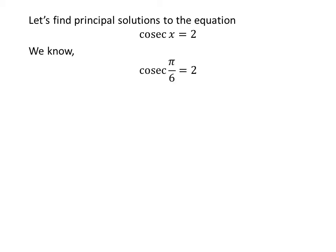We know the value of cosecant of pi upon 6 is 2. We also know the famous trigonometry identity cosecant of pi minus A is equal to cosecant of A.